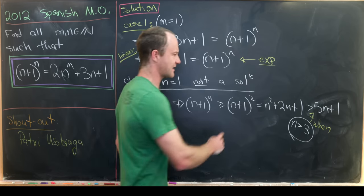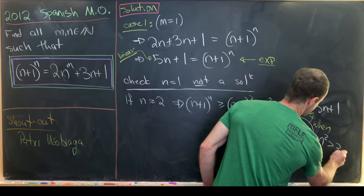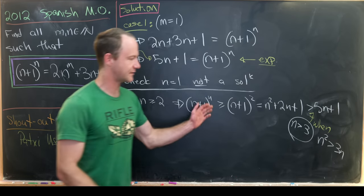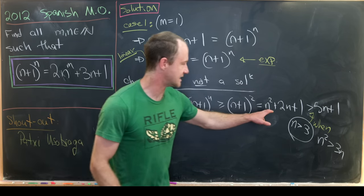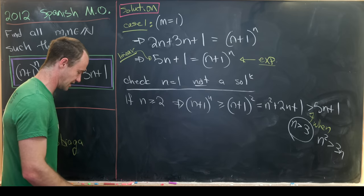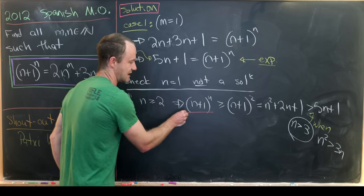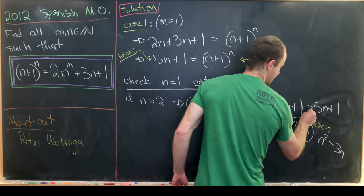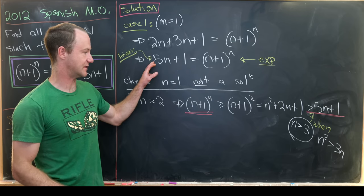And you can check that just by moving some things around and seeing that you get n^2 is bigger than 3n. So if n is bigger than 3, then n^2 is clearly bigger than 3n, which means that we've got this n^2 + 2n + 1 is bigger than 5n + 1. But now looking at the extreme left and right-hand side of this inequality, we see that we definitely can't have this being true.